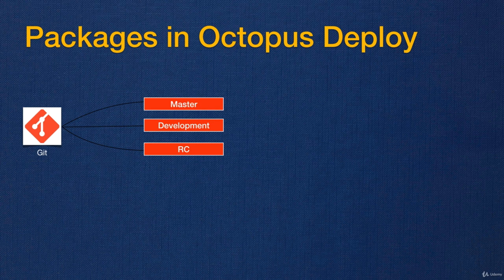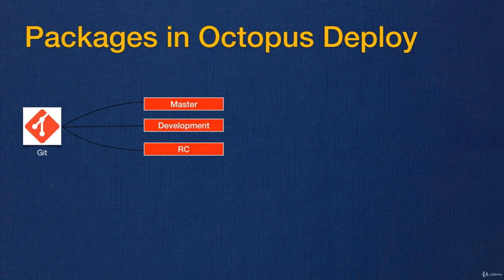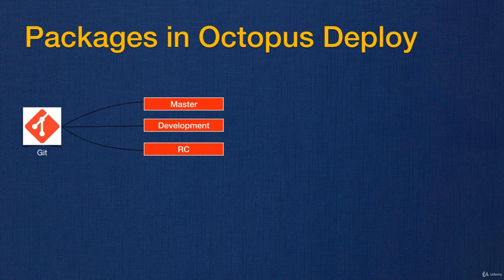Normally you have your source code in a Git repository or Team Foundation Server, and it's very rare that teams don't have multiple branches. At a bare minimum there's normally a master branch — sometimes called trunk. Master always represents what you have in production, so if you lose your production environment you can build master, deploy it, and be confident it's been tested. Then you have a development or develop branch where developers keep pushing changes. You may also have a release candidate branch, called RC.